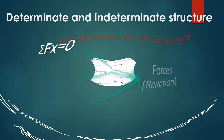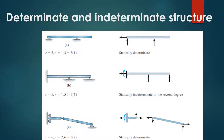In general, we can determine if a structure is statically determinate or indeterminate by drawing a free body diagram for a structure or part of it, and comparing the number of unknown forces and moment components with the number of available equations of equilibrium.